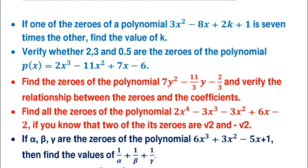In the next question, verify whether 2, 3, and 0.5 are the zeros of the polynomial p(x) or not. This is a simple question — check whether these points are zeros by substituting each value in place of x. If the value of the polynomial becomes 0, then that number is a zero. For example, if putting 2 in place of x gives 0, then 2 is a zero of p(x).